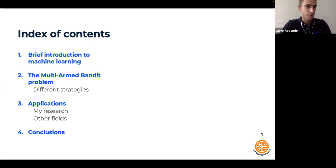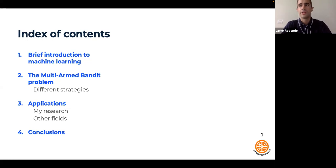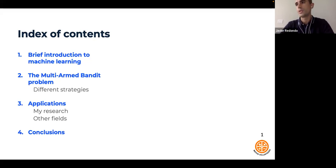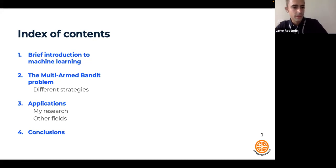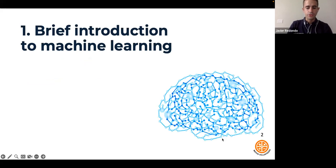I'll give a very brief introduction to machine learning for those who may not be very familiar with it. After that, we'll talk about the multi-arm bandit problem, which is our main focus today. We'll discuss different strategies to solve it, then look at different applications — because this problem can be applied to any kind of field, from epidemics to selecting a restaurant in a city. Finally, we'll go through the conclusions.